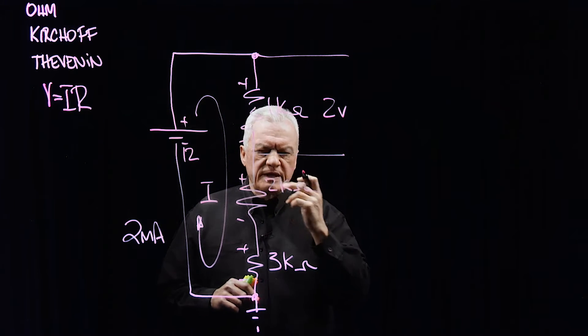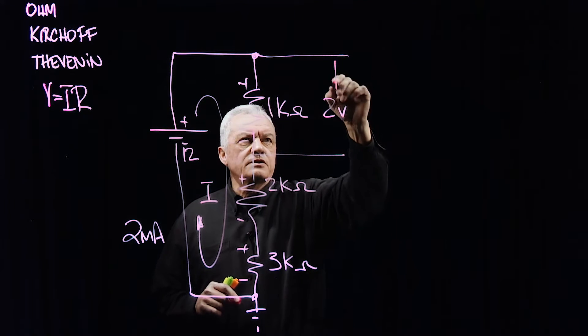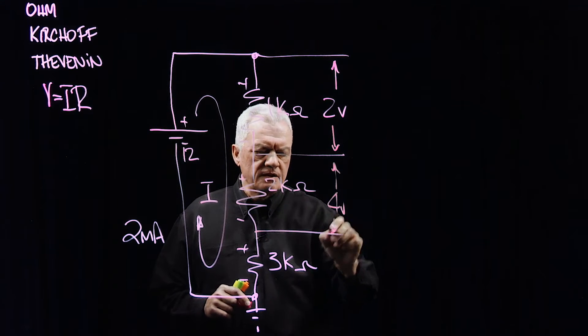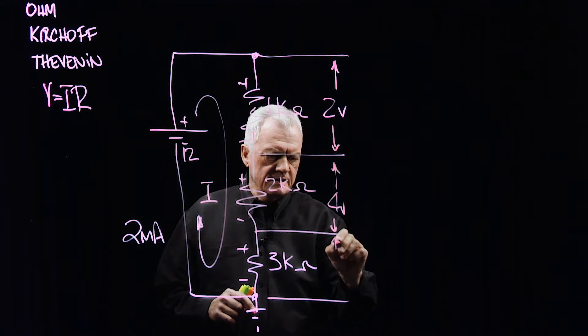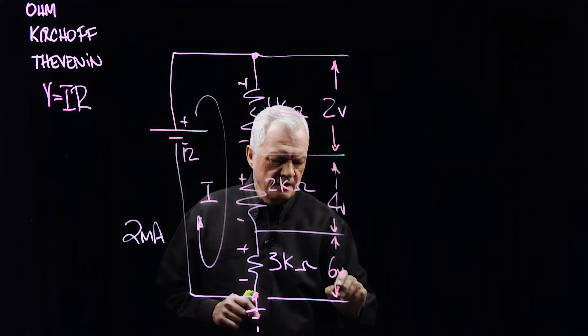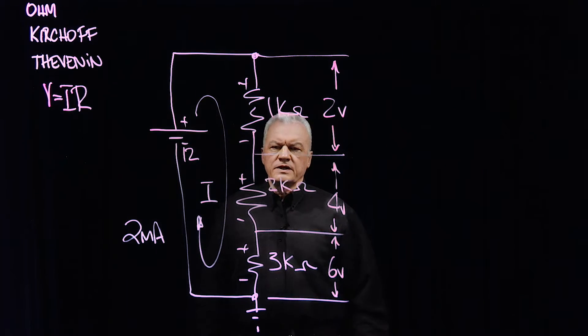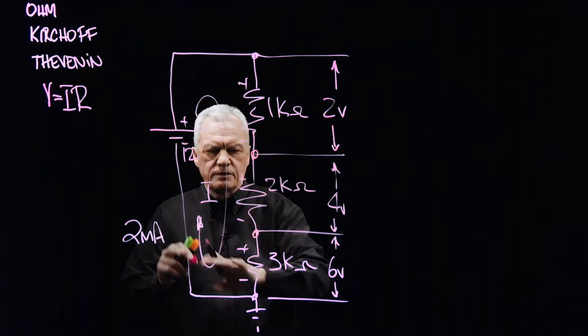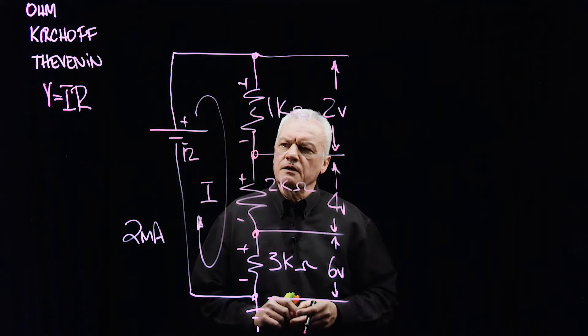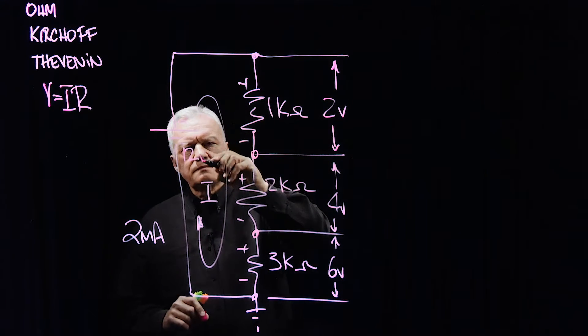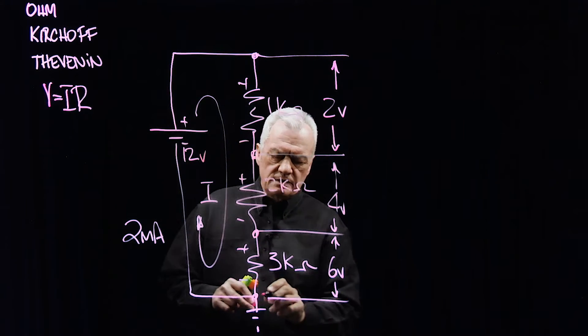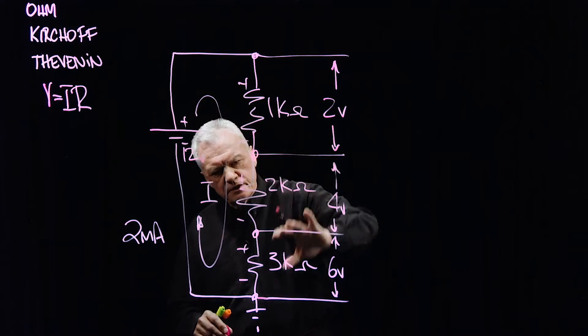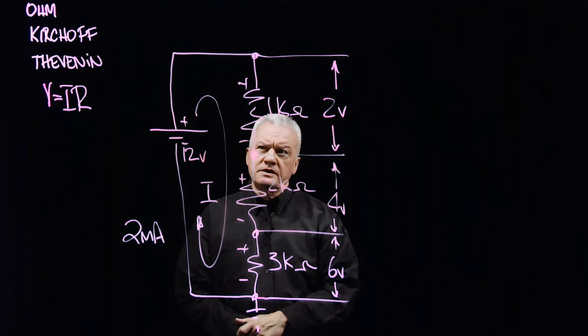In this case here, let's just go back to the numbers we had. We had 2 volts across here, we had 4 volts across here, and here we had 6 volts. Now, what Kirchhoff said was, first of all, you need a closed loop so that we have current flowing. In a closed loop circuit, we can note that the sum of the voltages around the loop equals zero.